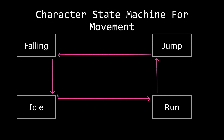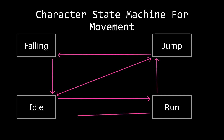This looks like a basic state machine for movement, but we can add on to this. For example, our idle state can change immediately into the jump state and vice versa. Our jump state can turn into the idle state — for example, if we jump onto a ledge, we will not fall. In addition, if we are running, we can also stop running and return back into the idle state.